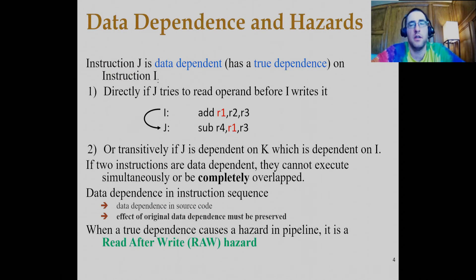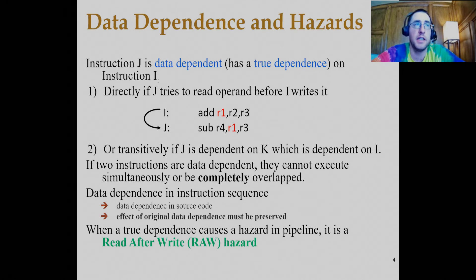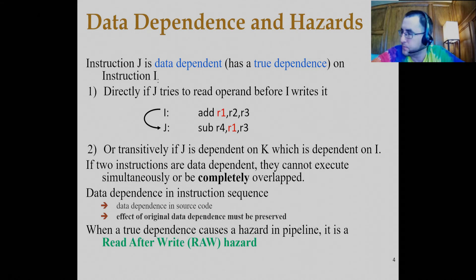Data dependencies come in multiple forms. The true dependence between two instructions is sometimes called a read-after-write dependence — instruction J reads the operand after I has written to it. This becomes a hazard in the pipeline if J attempts to read the operand before I manages to write to it. A true dependence becomes a RAW hazard if J is allowed to read from R1 before I writes to it. We solve this with data forwarding, or value bypassing, which is more efficient than stalling.